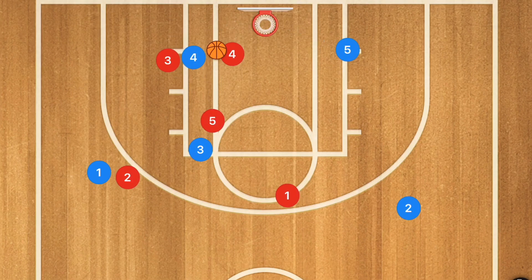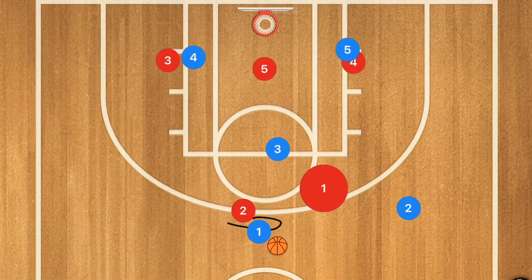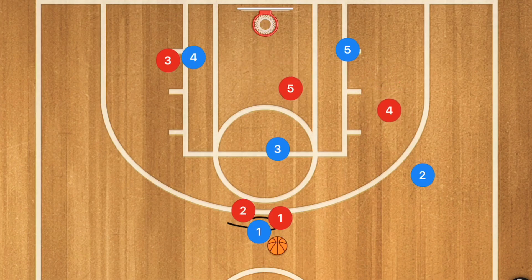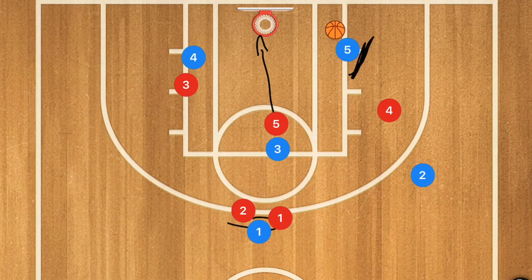Now when you dribble towards the middle, that's going to collapse those two players. Player four will be moving up, and we're going to have players five and three moving up as well. We can have a pass into player three, and player three could take that shot. If the defender raises up to player three, we're going to have a pass down to player five — especially if player five is sealing on this side — for an easy layup.